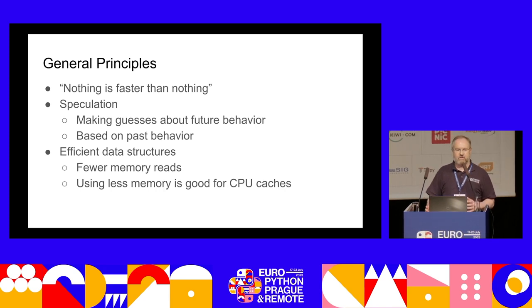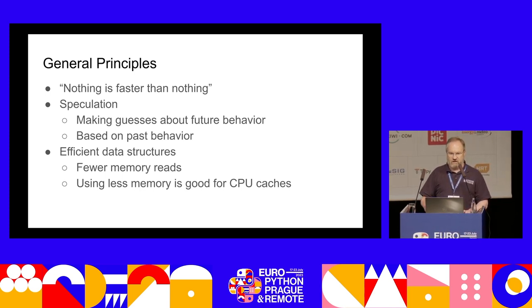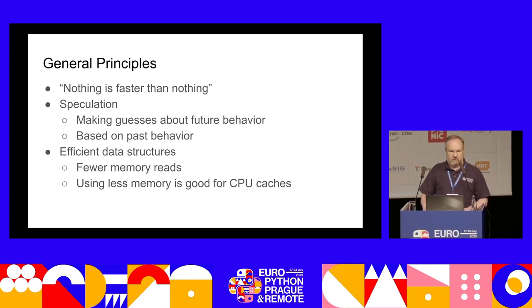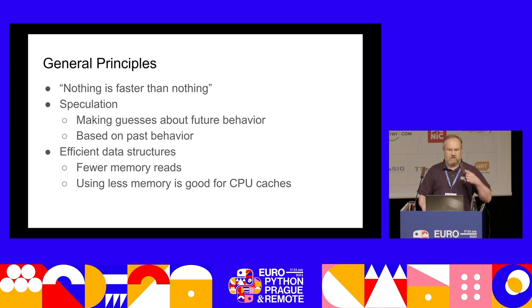There's speculation — making guesses about future behavior based on past behavior. If you've gone around a loop a million times and seen the same types every time, you're likely to see the same types next time. And there's efficient data structures — how we lay out Python objects in memory — which is more about making things work well on modern hardware. CPU clock speeds versus main memory reads are orders of hundreds of times faster, so fewer memory reads is always good.